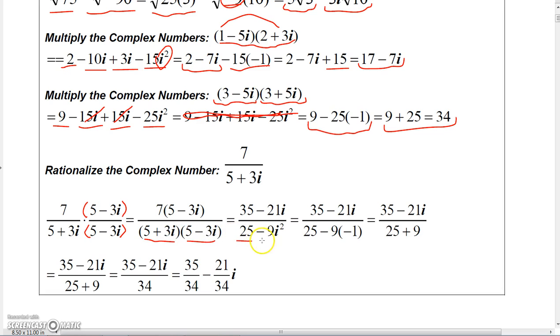...and all you're going to get is 5 times 5, which is 25, and then 3i times -3i, which is -9i². And then i² is -1, so you're going to get 25 - 9 times -1, which is 25 + 9, and that's going to be 34.